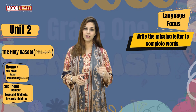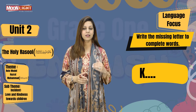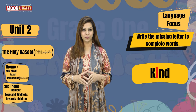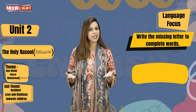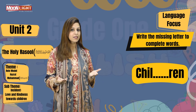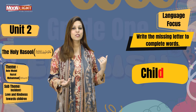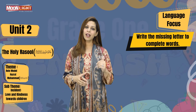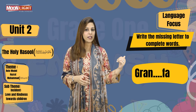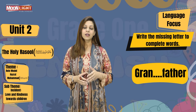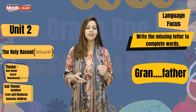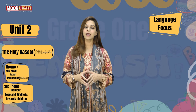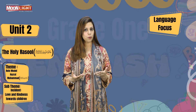The next word is CHIL_REN — the word is CHILDREN, so D is going to fill this blank. The last word is GRAN_FATHER — the word is GRANDFATHER, so D is missing. Now we are going to move towards the second category of language focus, and that is learning to spell. You have been given some sight words and below them there are some boxes — you are going to fill those boxes accordingly.